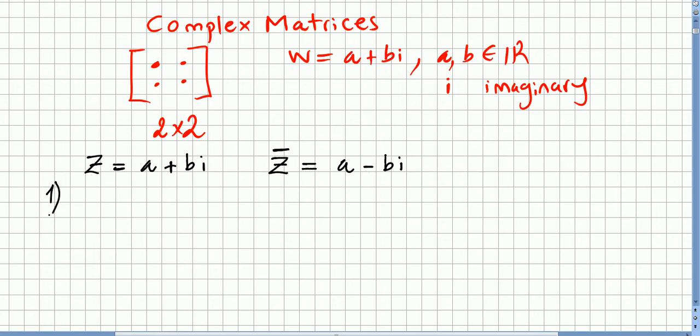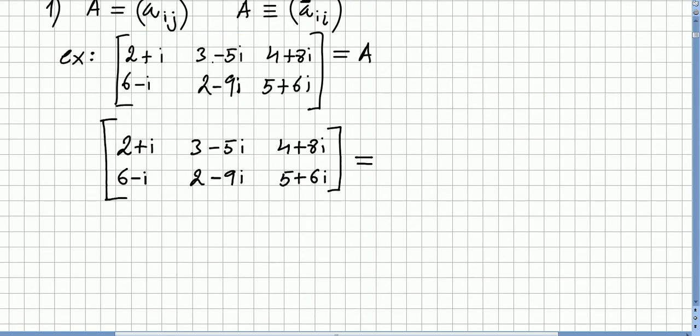So our first definition will be a complex matrix, which will be a matrix in the usual way A with entries a_ij. And the conjugate we are going to write as A bar. The conjugate will be defined as a conjugate in every entry, so A bar_ij equals a_ij bar.